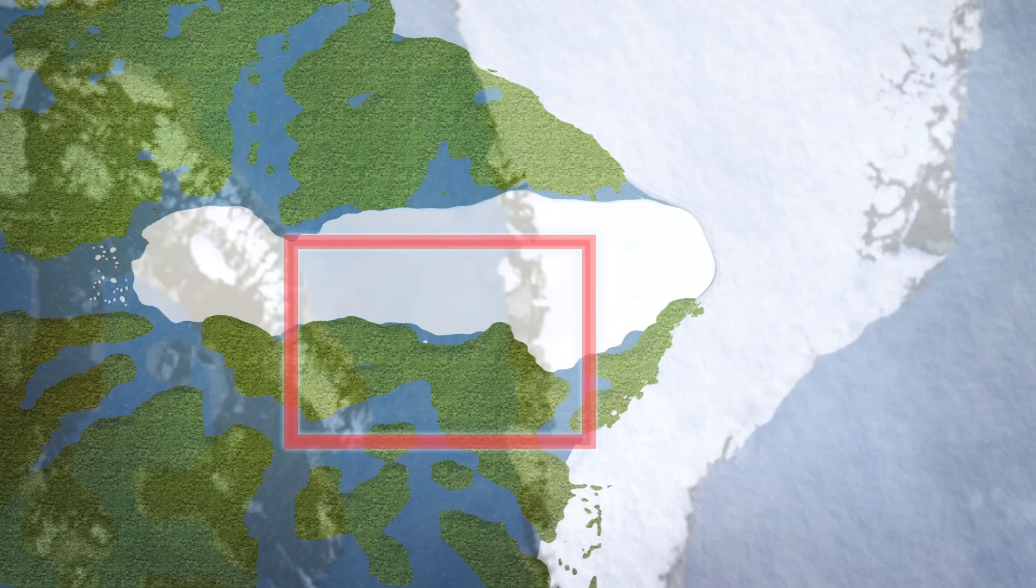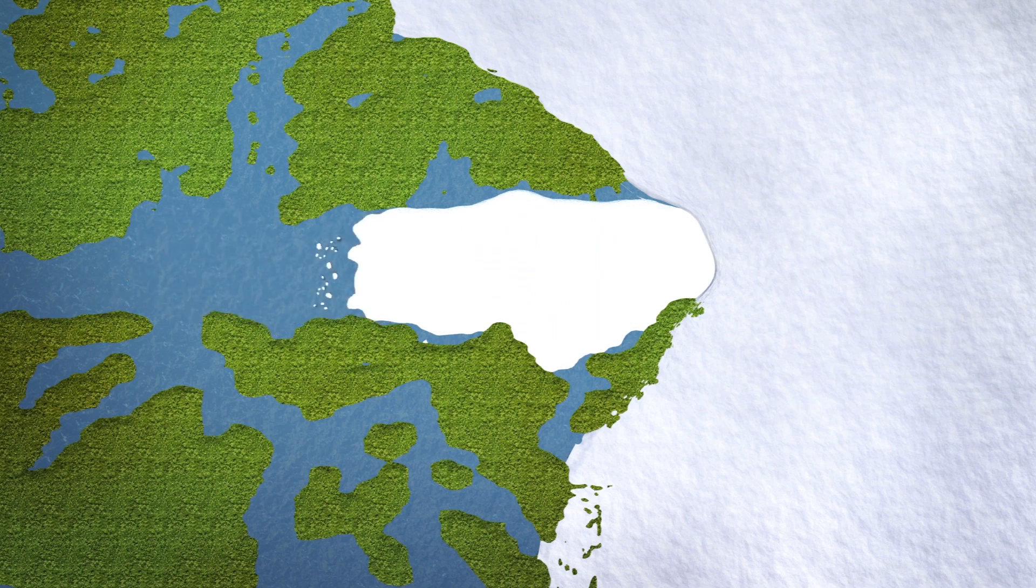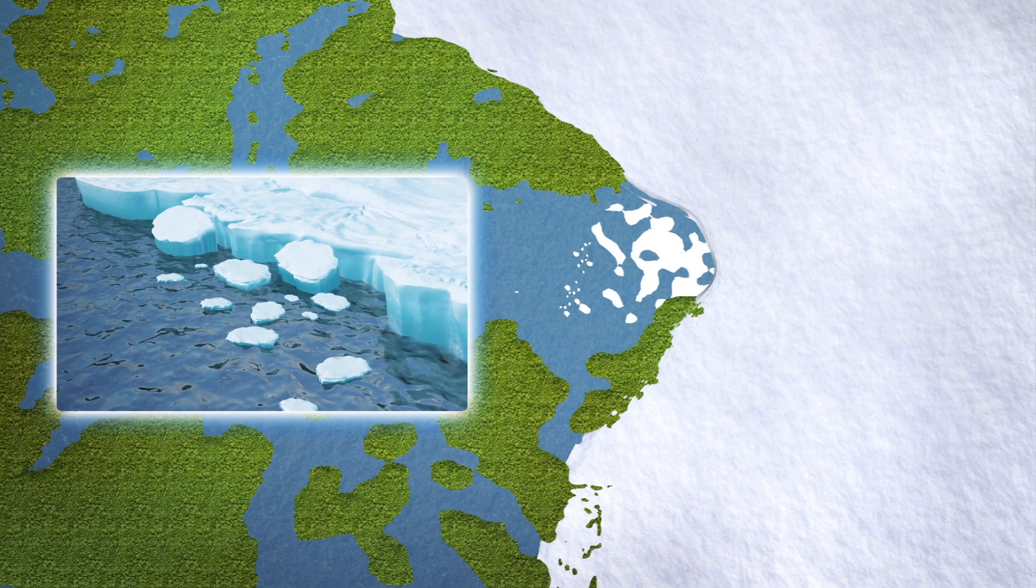According to NASA JPL, the Yakub 7 glacier in Greenland has been thinning and retreating over the last 20 years.